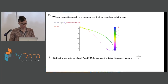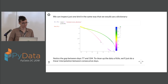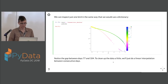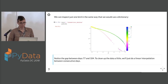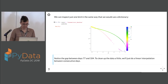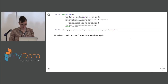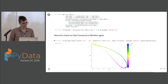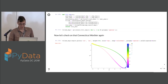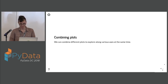In this data there's a gap between day 77 and day 104. That's just missing data, but we know where the bird was, so we can just do a linear interpolation to fill it in. We'll do that little cleaning step and then look at the Connecticut warbler again, and it's cleaned up for our future analysis.